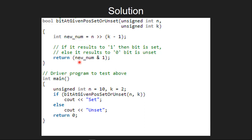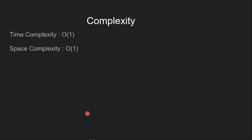In the second step, we first find the bitwise AND of new_num with 1, and then return the value. If the value returned is 1, the if condition gets true and we print set, else we print unset.